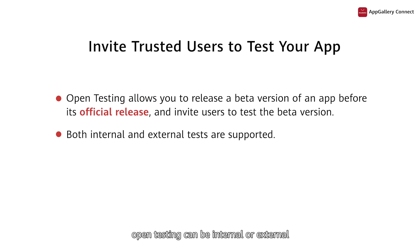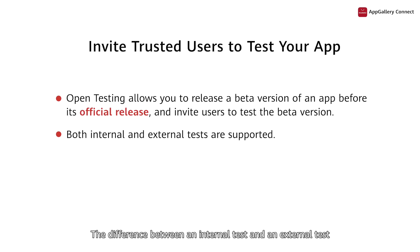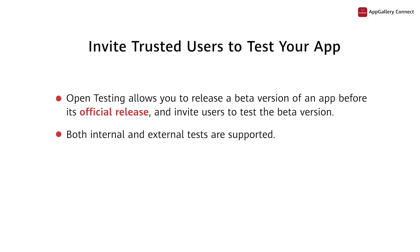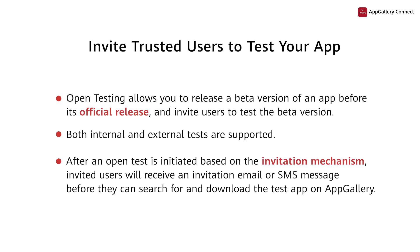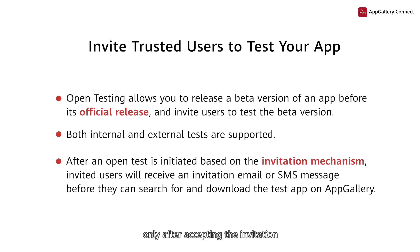Currently, open testing can be internal or external. The difference between an internal test and an external test lies in the number of invited users and the review process. Open testing is now based on the invitation mechanism, in which only invited users can be notified of the test. They can then download the app to be tested on AppGallery only after accepting the invitation.